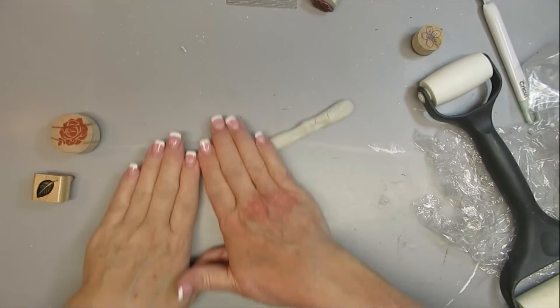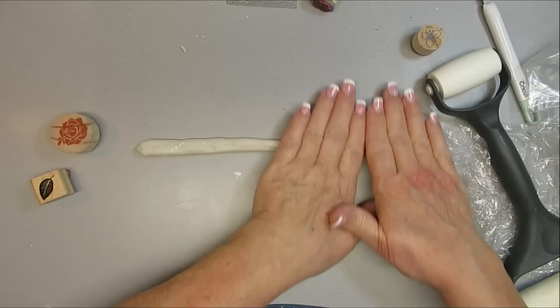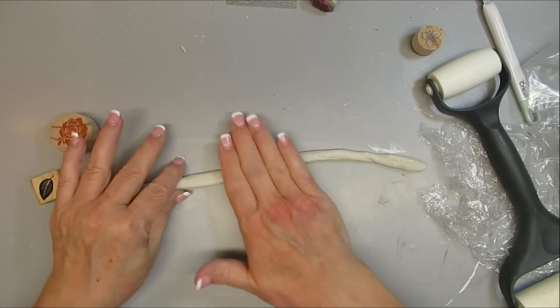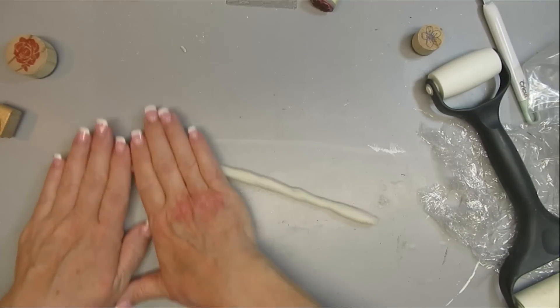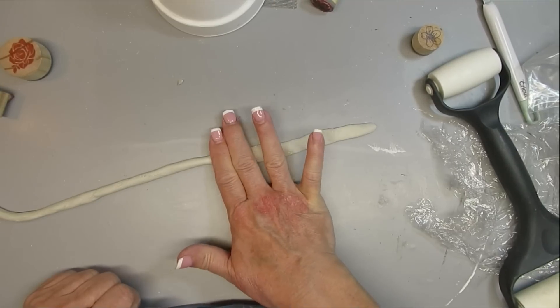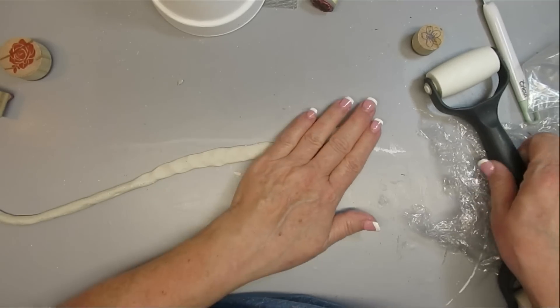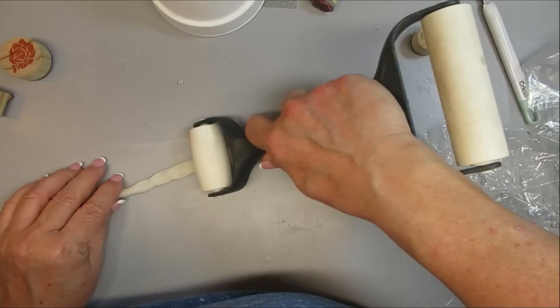For the second smaller pot, I wanted to make sort of a trim accent around the rim of the pot. So I'm just creating a snake out of my clay and I'm just going to make sure that I have enough length to go around the pot rim. Once then I'm going to use my hands to flatten it down a little bit, and I also use the rolling pin just very gently to flatten it out even a little bit more, make it about an inch wide.